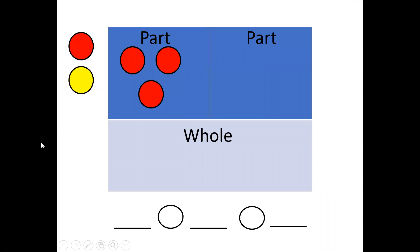In my first slide you'll notice that I'm keeping my red and yellow tiles off to the side of my mat so that I can use them to build on my part, part, whole mat. So I've moved three red tiles over and put them in one of my part sections.